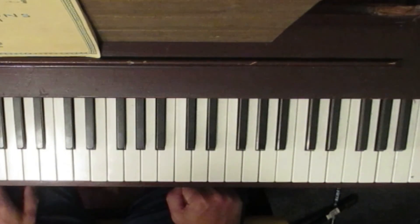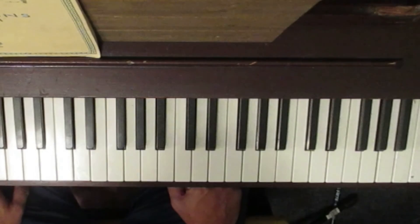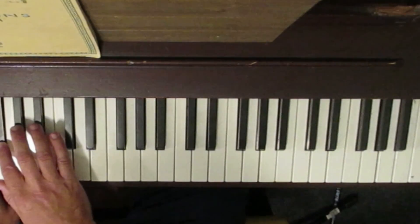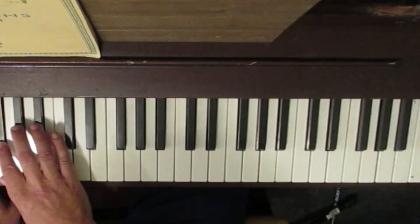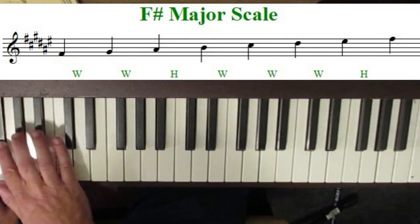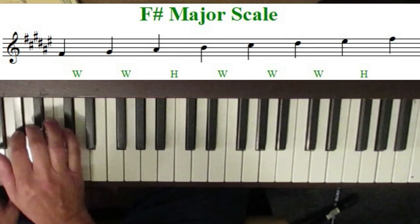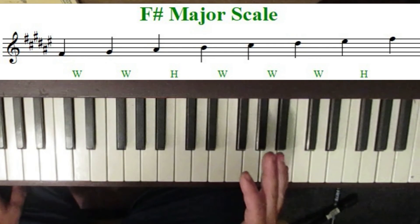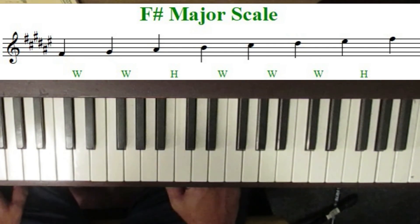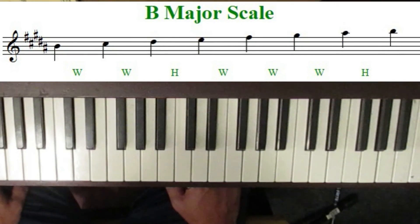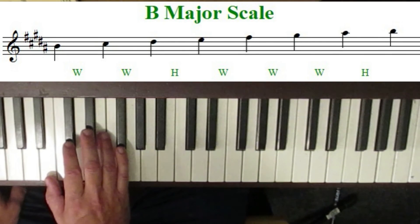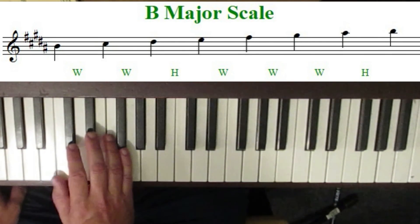Now there are two more theoretical keys: G flat and C flat major. G flat major is actually the exact same as F sharp major — it's the same notes. So they're what we call enharmonic equivalents: F sharp is the same as G flat. Similarly, the C flat major scale would be the same as the B major scale.